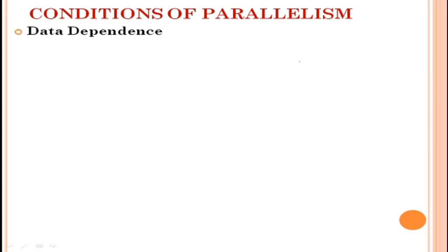First, we'll see data dependency. The ordering relationship between statements is indicated by the data dependency. There are five types of data dependency. The first one is flow dependency. Statement S2 is flow dependent on statement S1 if an execution path exists from S1 to S2.